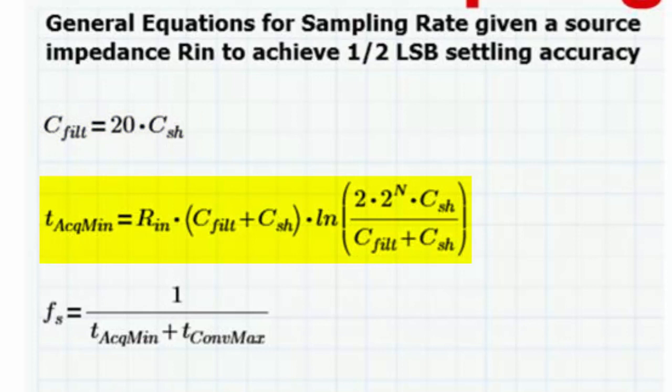To find the minimum acquisition period, use the equation given here. The acquisition period is used with the specified conversion period to calculate the sampling rate. This equation is derived at the end of the presentation. For now, just realize that the equation is based on a standard charge for an RC circuit, as well as a charge redistribution that happens when the sample and hold is connected to the C-Filt capacitor.